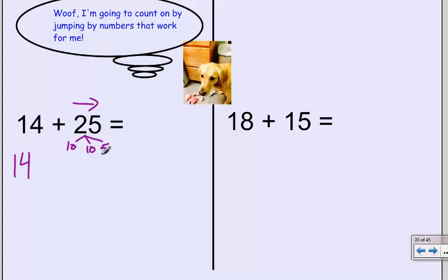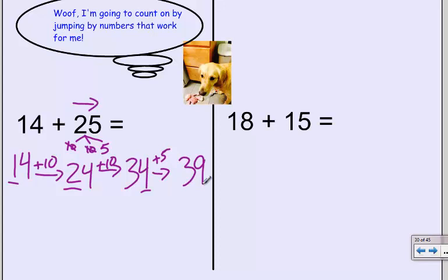My first jump is going to be to add ten. And I know that's only changing the number in my tens place. My second jump is to add another ten. And that's, again, just going to change the number of tens I have from two tens to three tens. Now I need to jump five ones. So I'm going to add five ones, and that's going to change my ones place. Four ones plus five ones is nine ones. So I know that 14 plus 25 is 39.